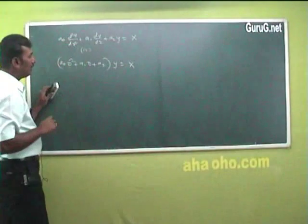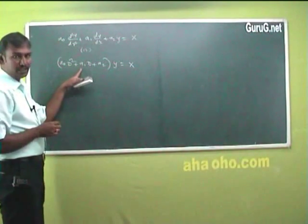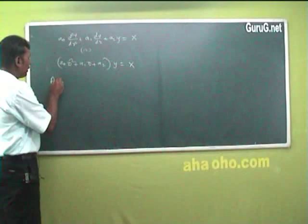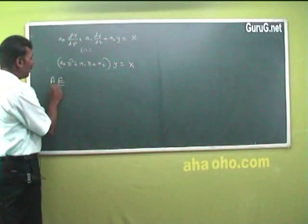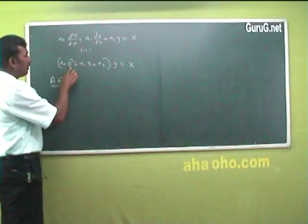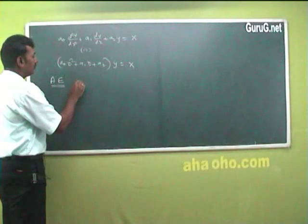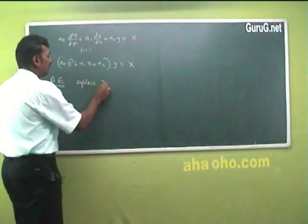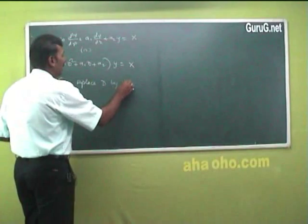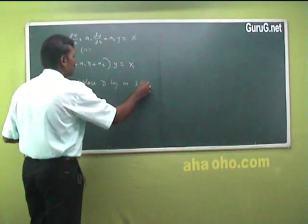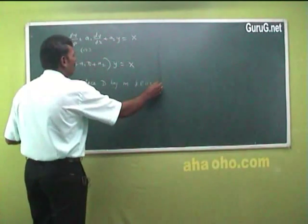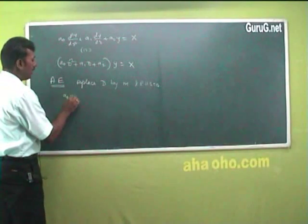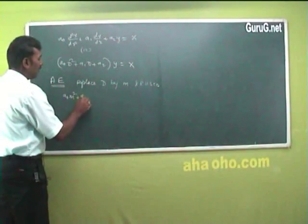Now we have to solve this equation. To solve, we replace D by m on the left-hand side and set the right-hand side equal to 0. This gives us: a₀m² plus a₁m plus a₂ equals 0, which is the auxiliary equation.